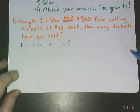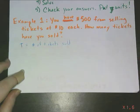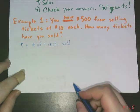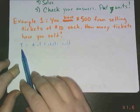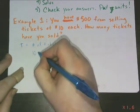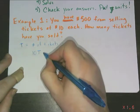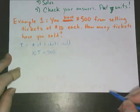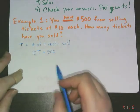Not really appropriate to draw a picture here, so let's go ahead and write an equation. I have a total of $500 after selling T number of tickets at $10 each. Well, $10 per ticket times the number of tickets should give me that $500 total. Now that I've written the equation, let's solve.